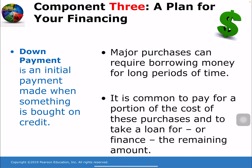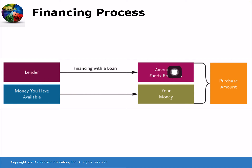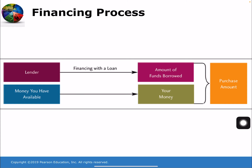When you look at the financing process, for larger items you borrow money from a lender and combine it with your down payment. The amount of funds borrowed plus your down payment equals your purchase amount. For example, with a $10,000 car, you put down $2,000 and borrow $8,000.